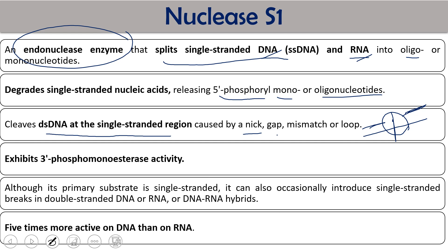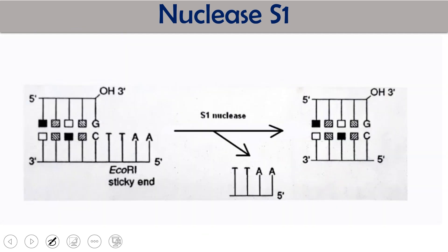This is one example. If you can see, this is the double-stranded DNA where some portion of DNA is single-stranded region. When S1 nuclease walks on this, it is going to break this single-stranded DNA. This oligonucleotide will be removed and ultimately you will have a blunt-ended DNA.